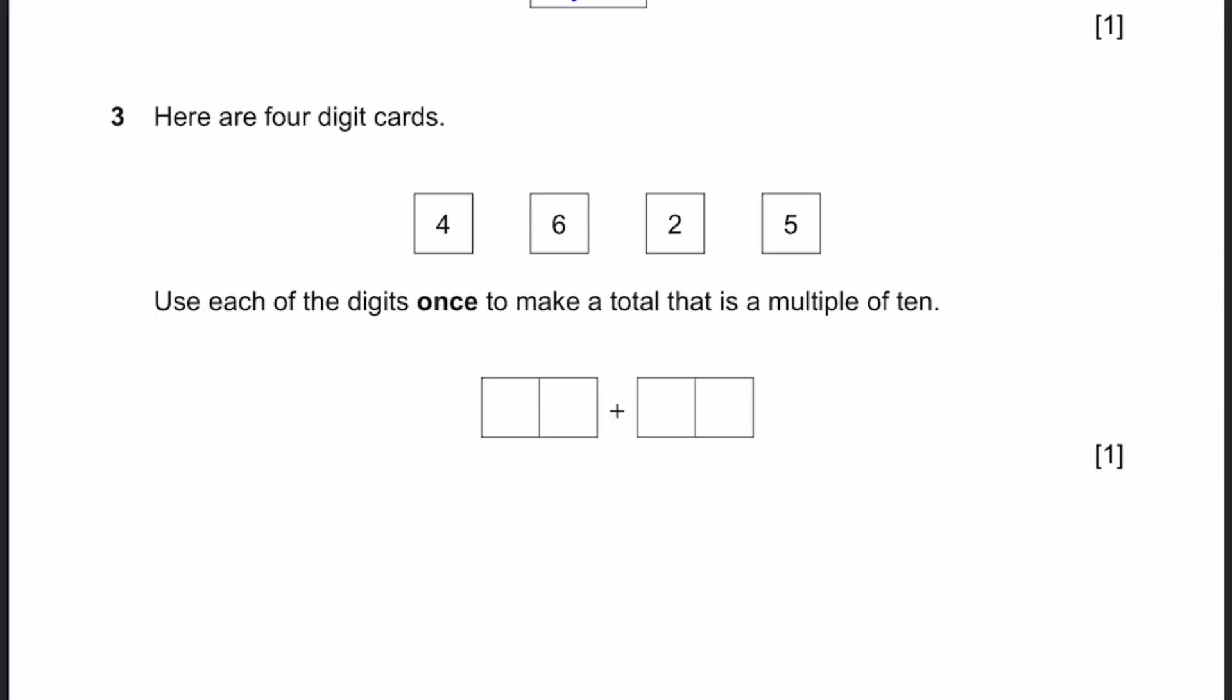Question 3. Here are 4 digit cards. Use each of the digits once to make a total as a multiple of 10. So something plus something in these digits has to be 10. 4 plus 6 is 10, right? So we put 4 here, and we put 6 here, and we can put the 5 and 2 wherever we want. If you add them, it's 80. As long as 2 and 5 are in 10s, 4 and 6 are in 1s, it's correct.